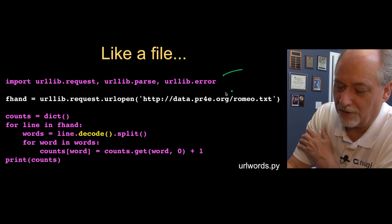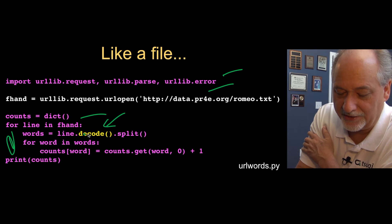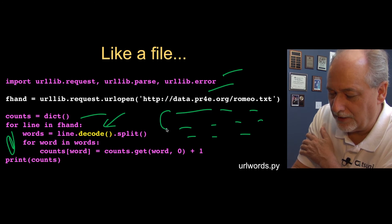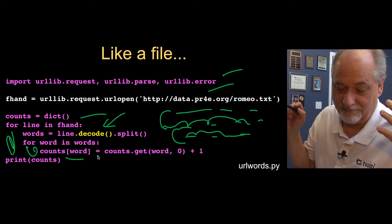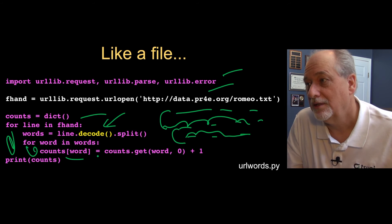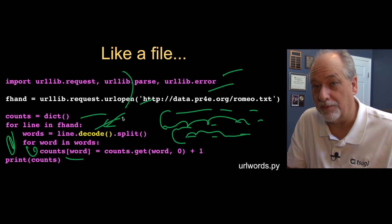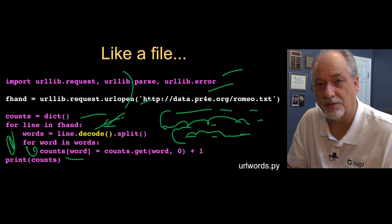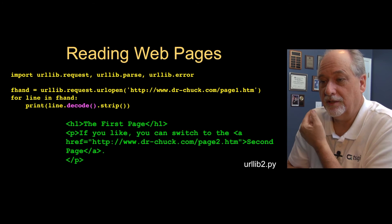That code: import it, open it, make a dictionary, loop through, split it. We have to add the decode just to make sure, because that line is bytes, not a string. We go through the words — the inner for loop bounces through the words, then we go to the next line, and we make ourselves a dictionary and print it out. This is exactly how we would process a file. By using urllib, you really reduce the complexity of retrieving network resources to the same complexity as reading a file locally on your hard drive, which is pretty nice.